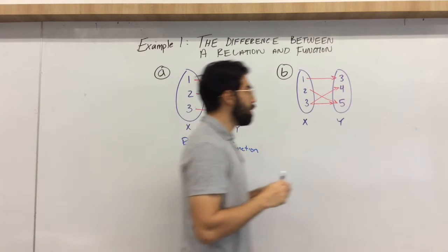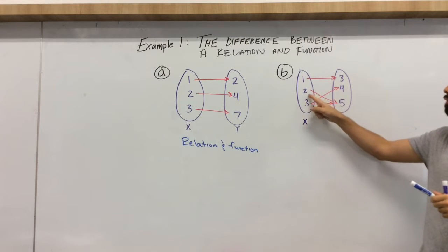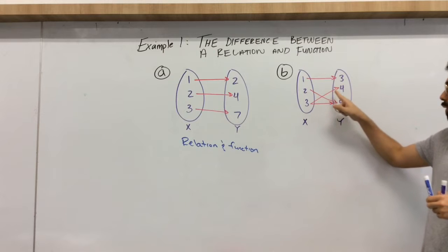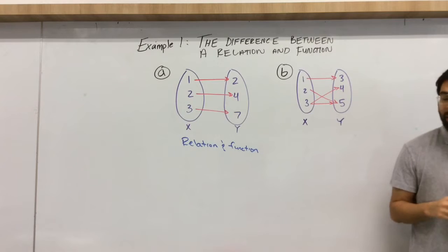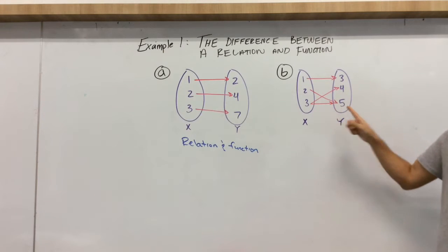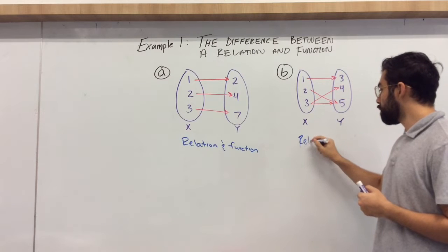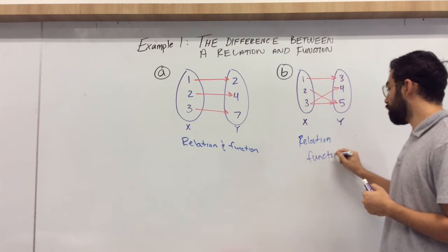So let's go on to b. Is b any different? Well, b looks different. So in this case, we have 1 going to 3, 2, output of 5. 3 has an output of 4 and 5. So again, remember what we said about functions. Each x has only one y output. So this would be a relation, but it would not be a function.